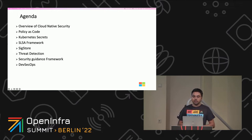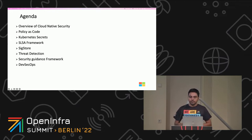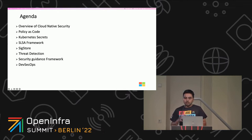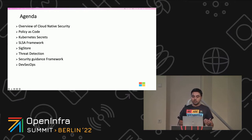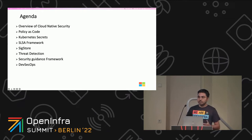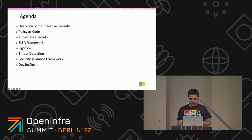I'll then talk about different areas like policy as code, Kubernetes secrets, threat detection, and others that fall under the overall scope of security. During this talk, I'll also cover a few specific tools that are used to address security concerns. But that doesn't mean those tools are the only ones for those particular use cases. The general best practice is to have a list of requirements and then explore which tool can solve your purpose. So let's begin.